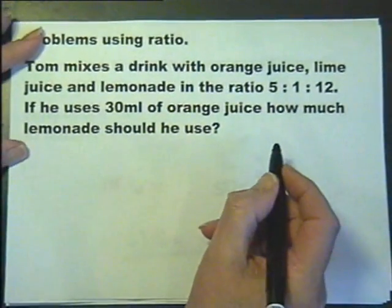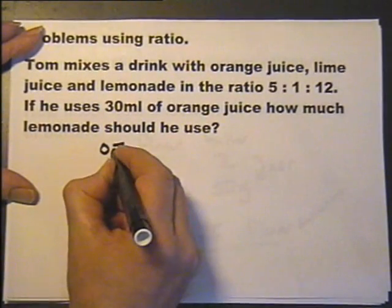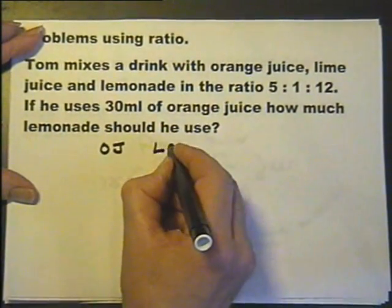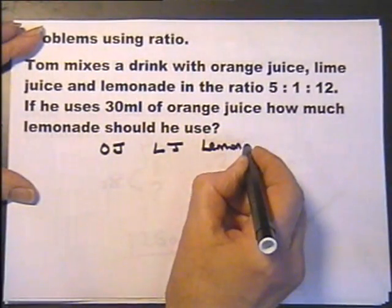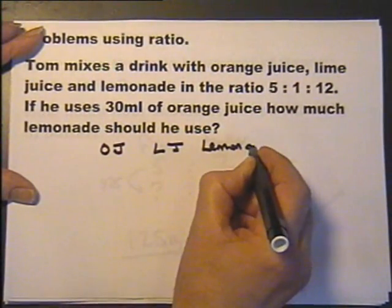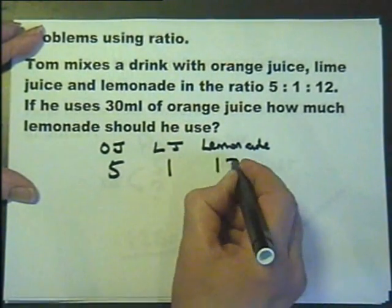Tom mixes a drink with orange juice, lime juice and lemonade. Orange juice, lime juice and lemonade. I'll write the whole word here I think. In the ratio of 5 to 1 to 12.